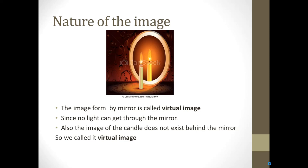So what is the nature of the image? The image formed by a mirror is called a virtual image. Since no light can get through the mirror, and the image of the candle does not exist behind the mirror, we call it a virtual image. We have two types of images: virtual image and real image. A virtual image is formed when no light can pass through the lens, like a mirror — no light can pass through a mirror, so the image is called virtual.